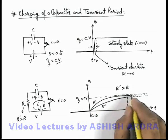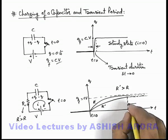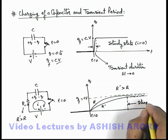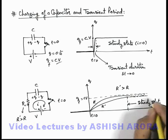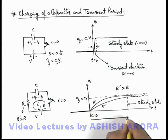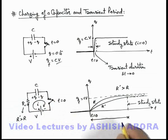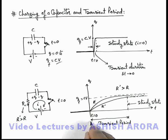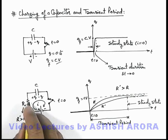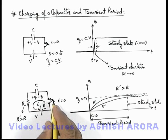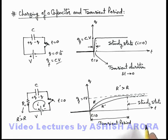When the capacitor is fully charged up to the level CV, we can say this is the steady state achieved by the capacitor. The duration up to which it was under transition or being charged is called the transient period. As the value of resistance in the charging of capacitor increases, the transient period also increases.